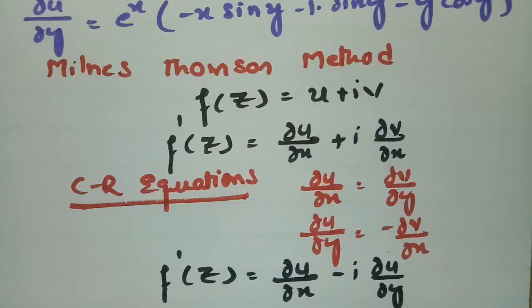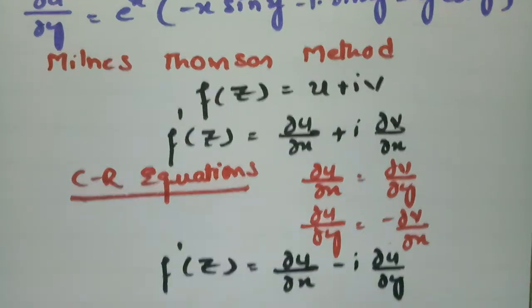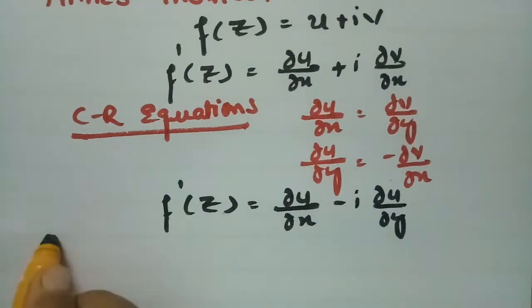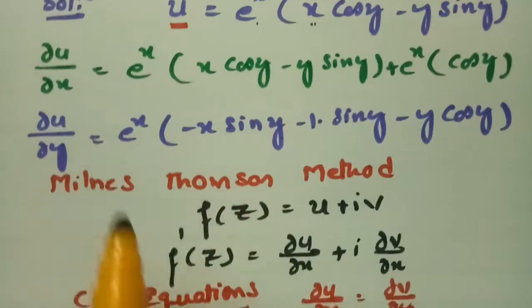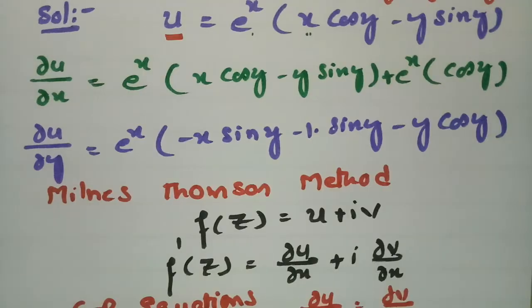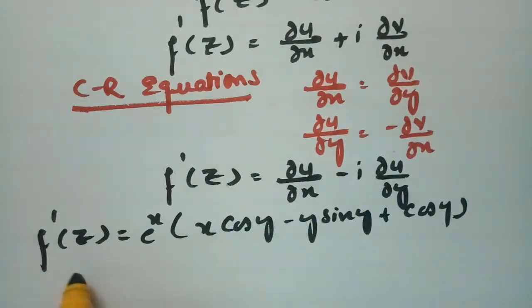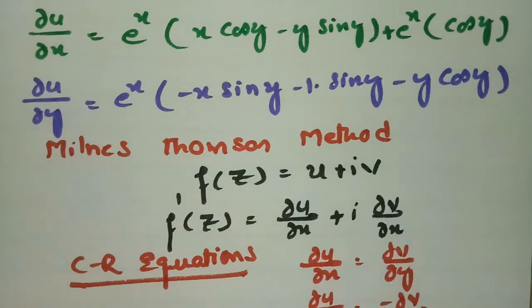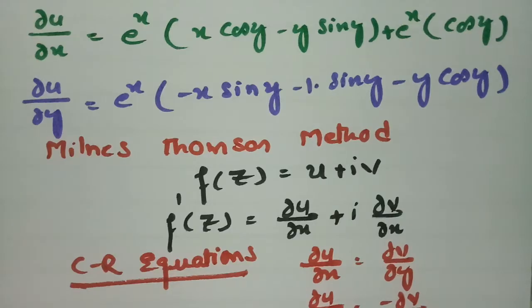So f'(z) = ∂u/∂x minus i times ∂u/∂y. Taking e^x common, ∂u/∂x = e^x·(x cos y − y sin y + cos y). And ∂u/∂y = e^x·(−x sin y − sin y − y cos y).